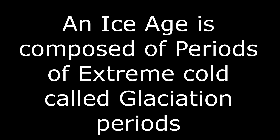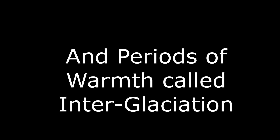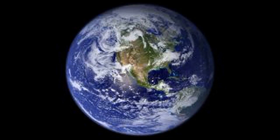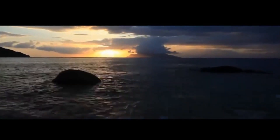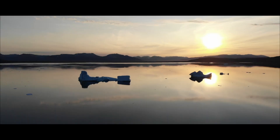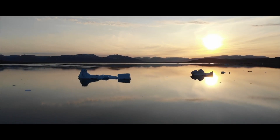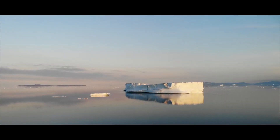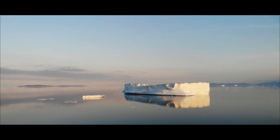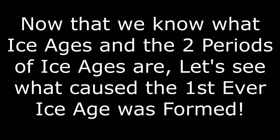Now let's learn what glacial and interglacial periods are. An ice age is composed of periods of extreme cold called glaciation periods, and periods of warmth called interglaciation periods. Ice ages aren't just periods of extreme cold — there are periods of warmth as well. This may sound absurd, but it is true. Now that we know what ice ages and their two periods are, let's see how the first ever ice age was formed.